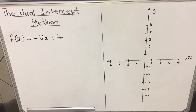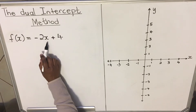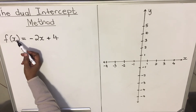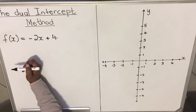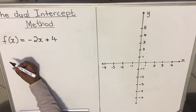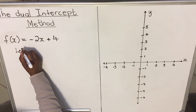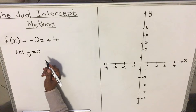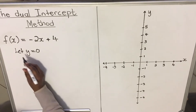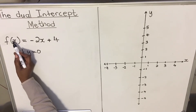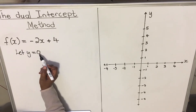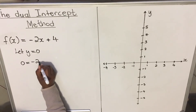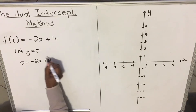Let's start with the x-intercept. Our function f(x) equals minus 2x plus 4. This is the function of x, and it can also be written as y. We find the x-intercept by letting y equal zero. Where there is a y, we write zero, so we have: 0 = -2x + 4.